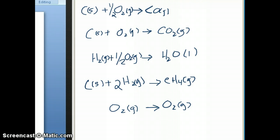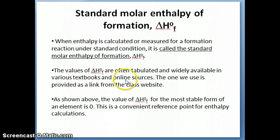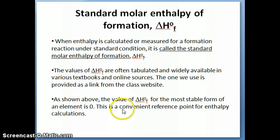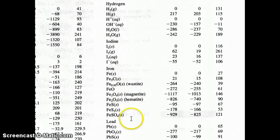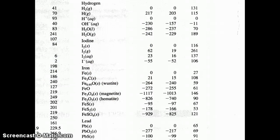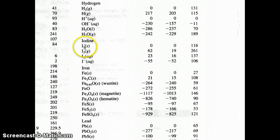That's what we saw in the table of standard enthalpy of formation. Another way of using this: if you don't know, for example, what is the most stable form of iodine, you can go to the enthalpy of formation table and look up the value that gives you zero. In this case, that's I2 solid, which means the most stable form of iodine is the solid form.